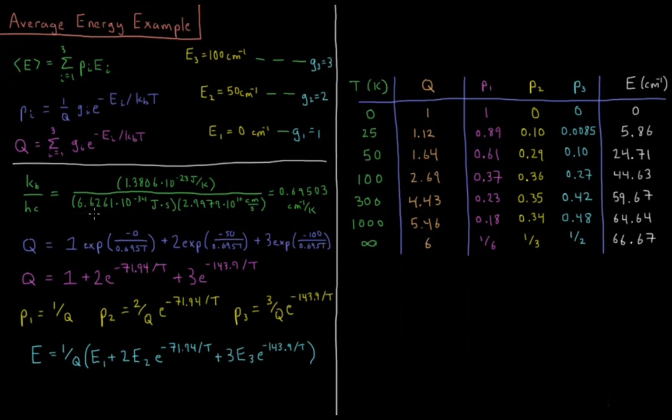So the first thing that we're going to do is I'm going to convert the Boltzmann constant into units which are appropriate for this system. The Boltzmann constant by default is in units of joules per Kelvin, so I'm going to convert that from joules to wave numbers. And it ends up being a very convenient value in wave numbers per Kelvin.